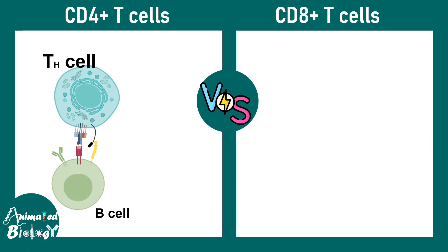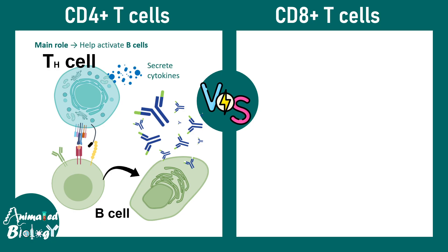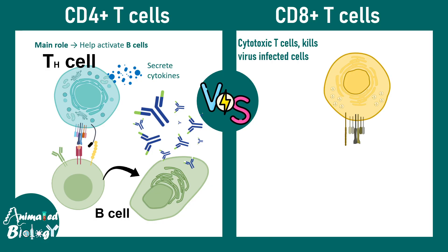The major job of T helper cells, or CD4 positive T cells, is to activate B cells and convert them into antibody secreting plasma cells. Other than that, they also secrete various types of cytokines which have diverse roles in the context of immune modulation.